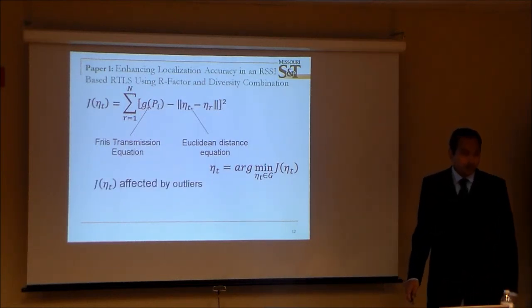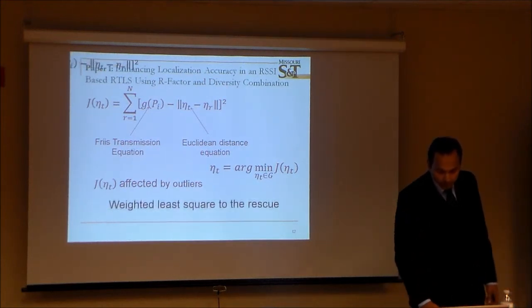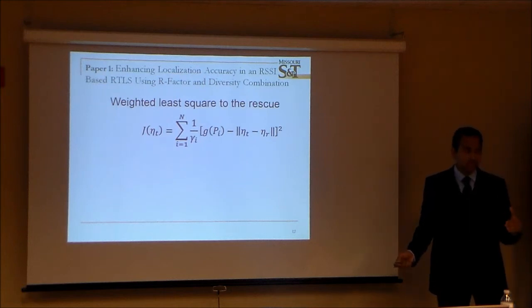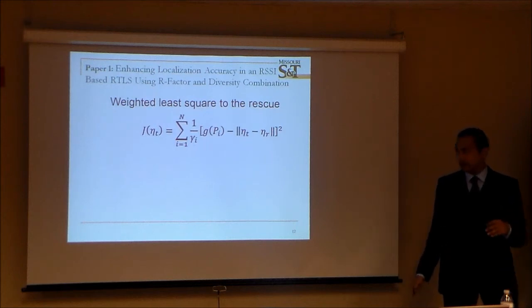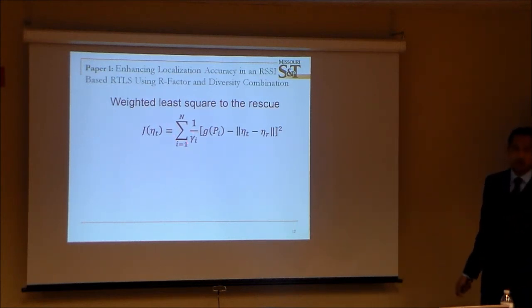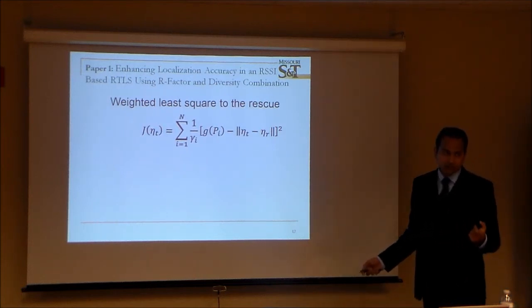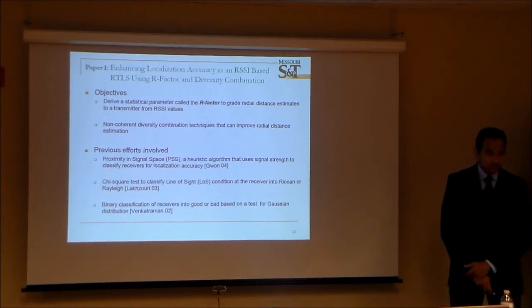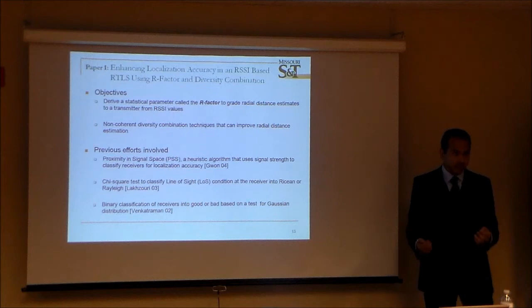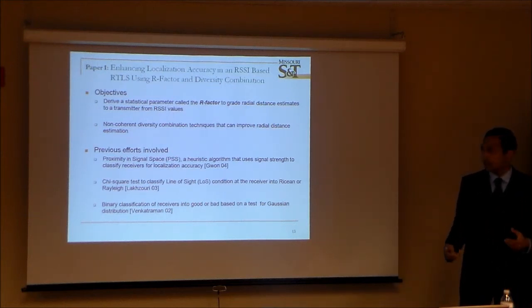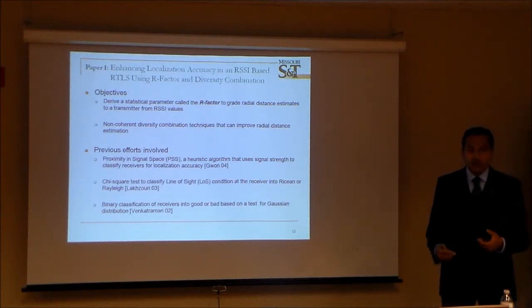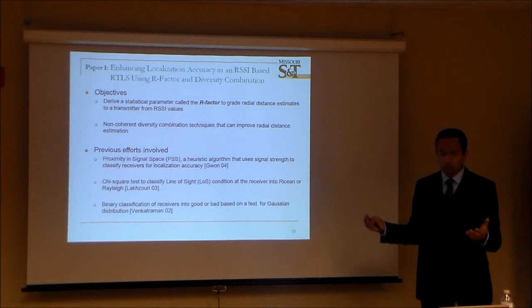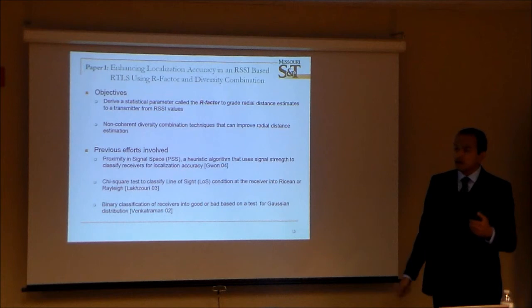The problem with the standard least squares cost function is that it is affected by outliers. So I provide a weighted approach: when variance is changing for a least squares problem, you scale the measurement by the estimated variance. That's where the R-factor — a new parameter I derived to quantify the error — comes in. It's basically a weighted least squares method for localization. My primary objective was to derive an estimate for the radial distance variance, which I call the R-factor, and also to reduce that variance through diversity combination — antenna diversity or frequency diversity.